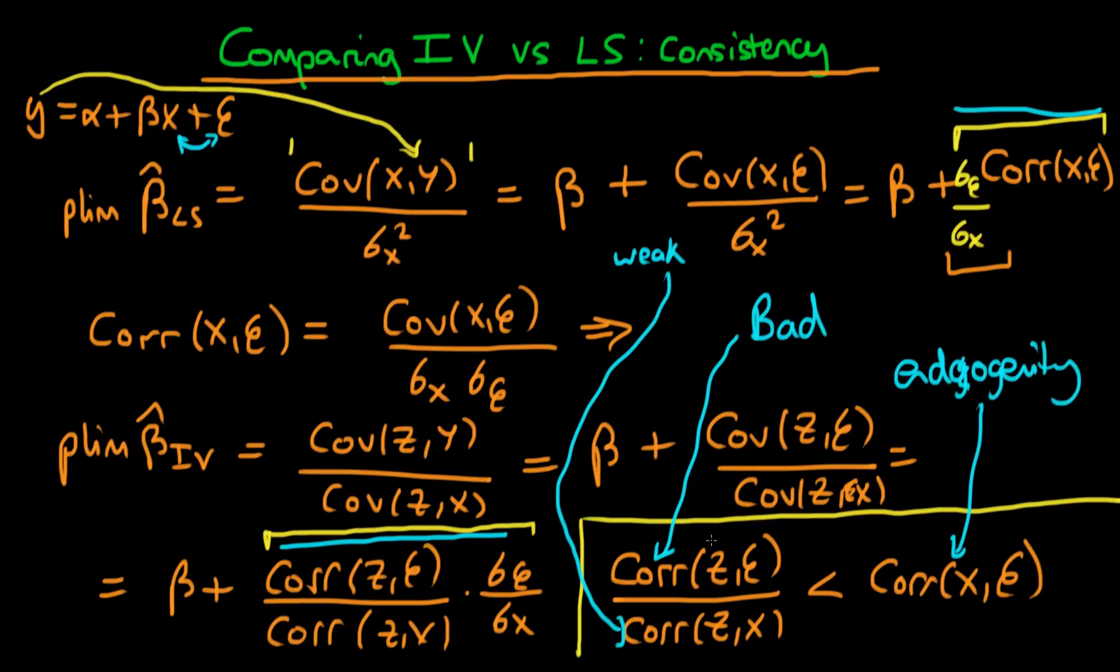So the idea is that if we have an instrument which is sufficiently strong, so there's a high correlation between z and x relative to how bad it is, then it is a good idea to use instrumental variables.